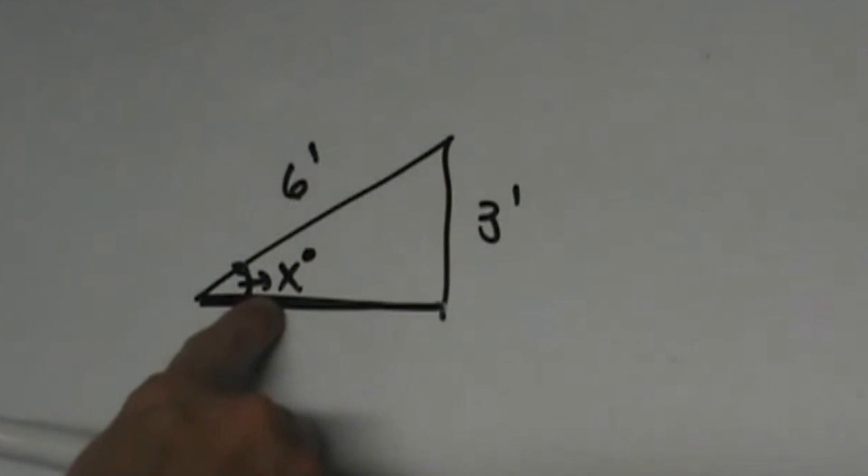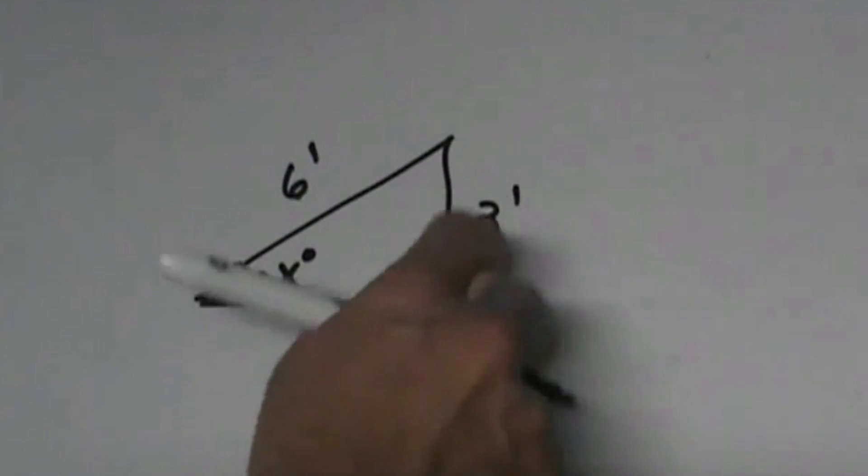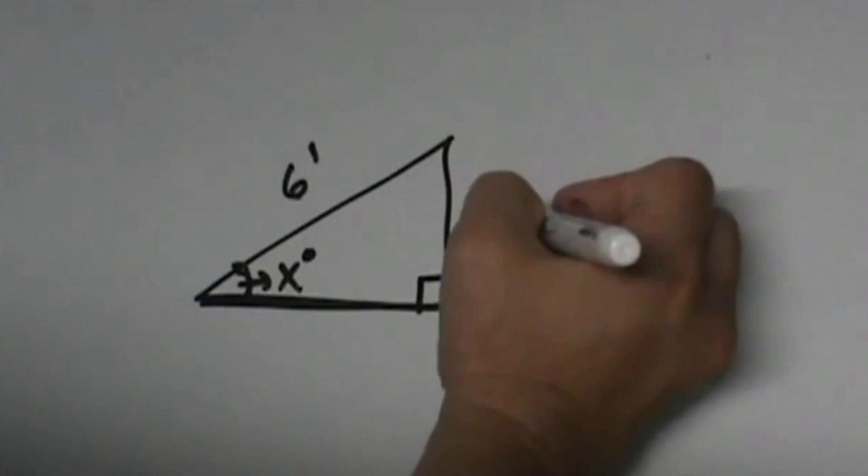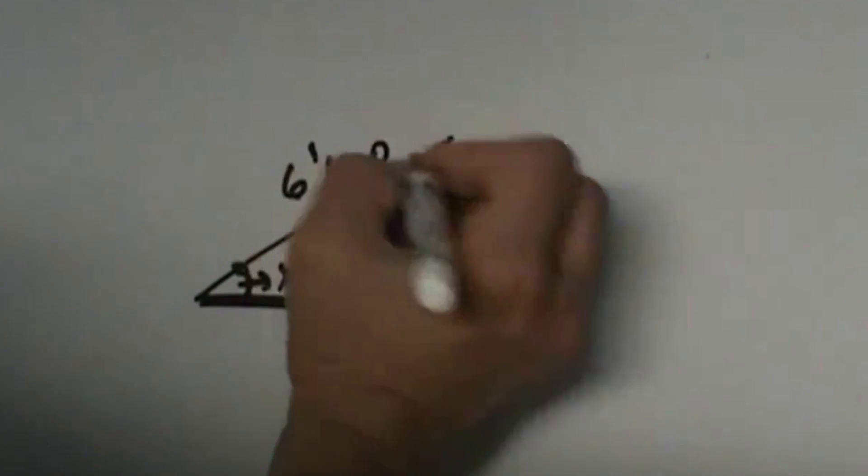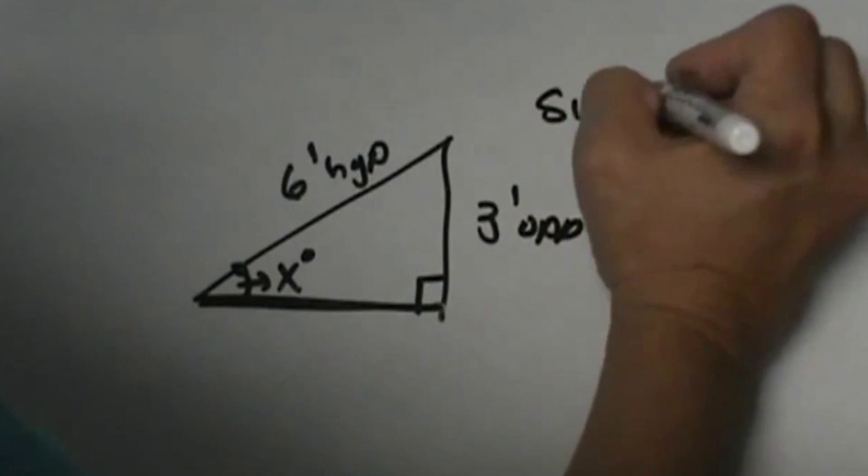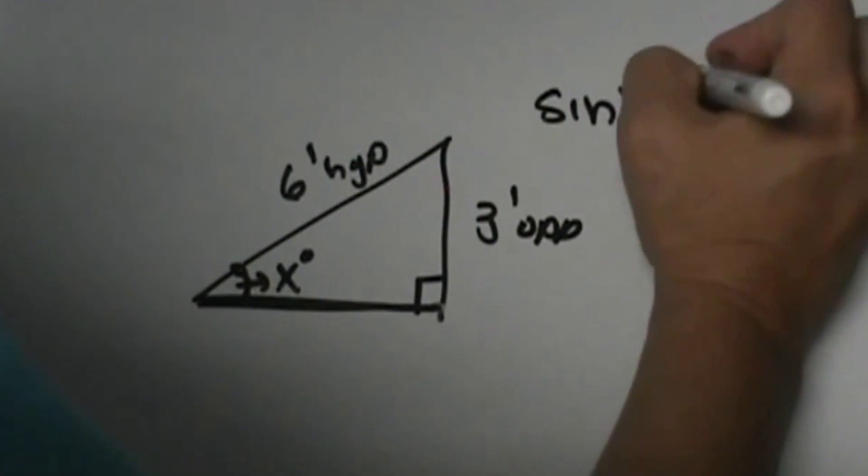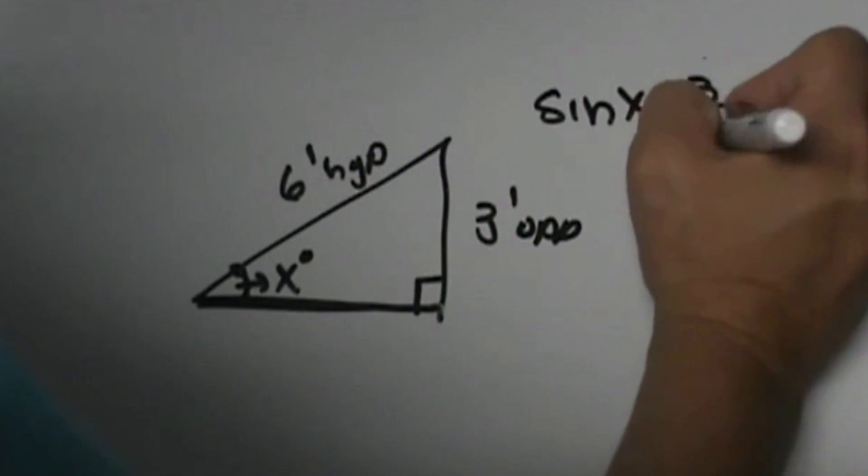So we have which two sides? Opposite and hypotenuse. Which one uses opposite and hypotenuse? That is sine. The sine of the unknown angle is 3 sixths.